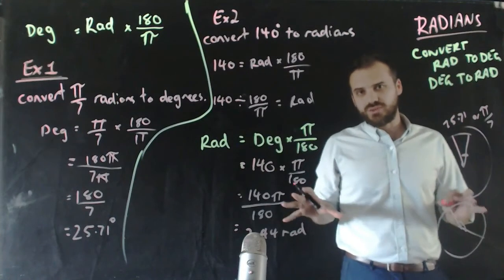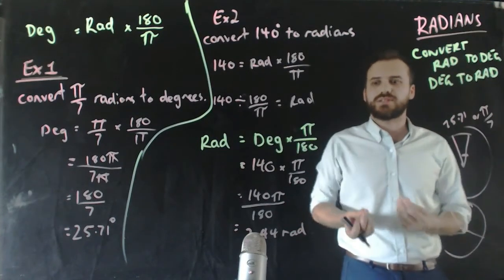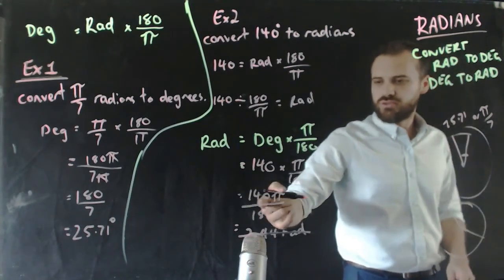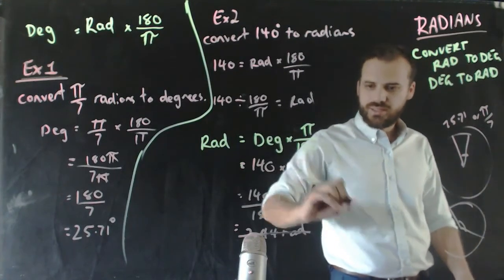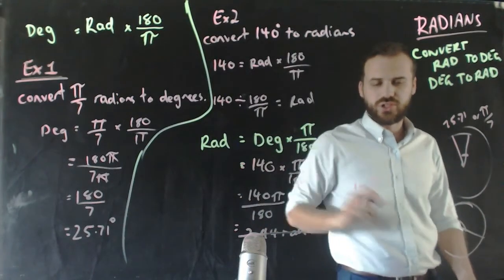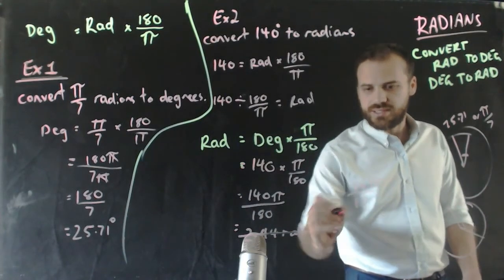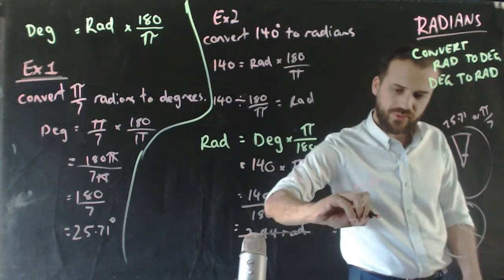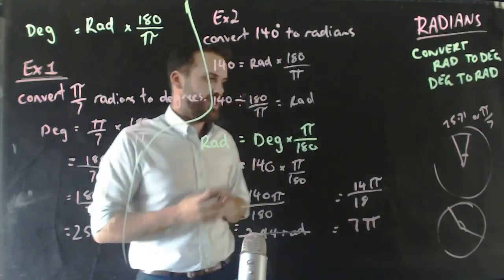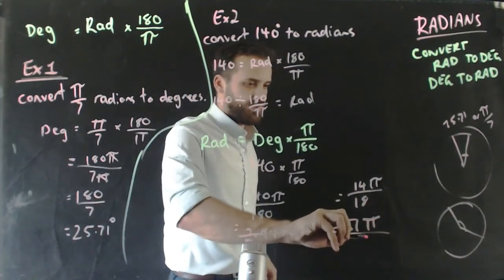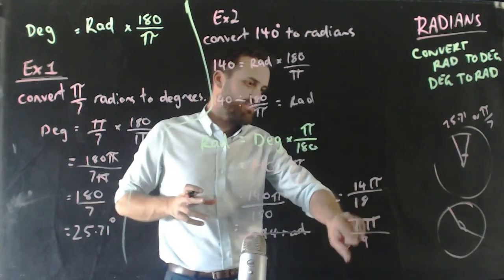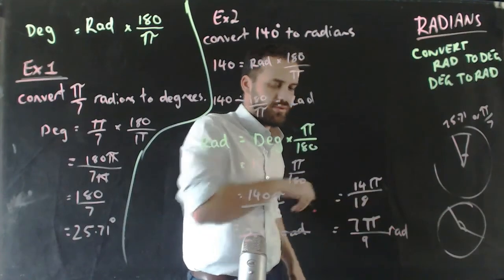Now, that's not a neat way to do this. When it comes to radians, we want to keep things as exact as possible. So instead of doing that, 140π divided by 180, that's the same as 14π divided by 18. I've just divided top and bottom by 10, which is the same as 7π over 9. Much, much neater way to do things. 7π over 9 radians.